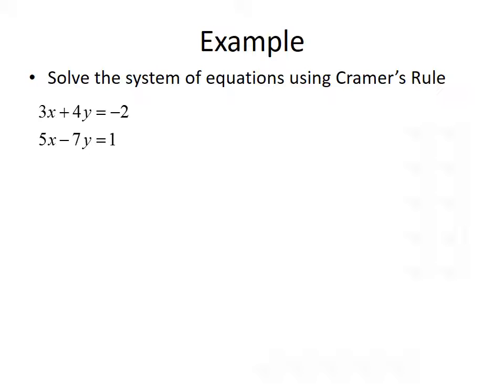Let's solve the system 3x plus 4y equals negative 2, and 5x minus 7y equals 1 using Cramer's Rule. We need to find D, D sub x, and D sub y. D is the determinant of the coefficient matrix 3, 4, 5, negative 7. We multiply the diagonal, 3 times negative 7 gives negative 21, and the off-diagonal, 4 times 5 gives 20, which we subtract. So negative 21 minus 20 gives us negative 41.